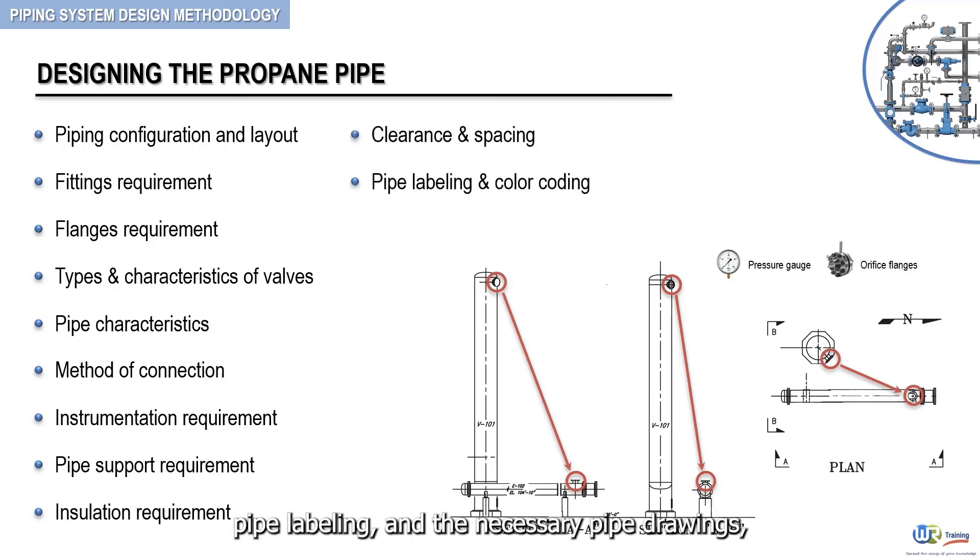And the necessary pipe drawings, including equipment location drawings, piping arrangement drawings, and piping isometrics. We will assume for the sake of demonstration that this propane pipe falls under the A15 piping class.